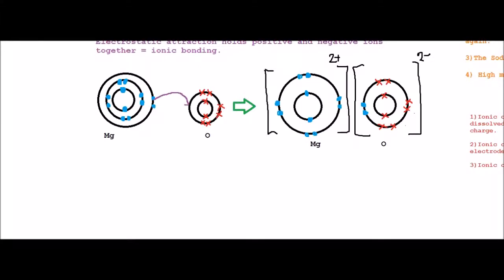And that means that it will be given here as 2+ and 2-, and that's how you do the little dot-cross diagram for magnesium oxide.